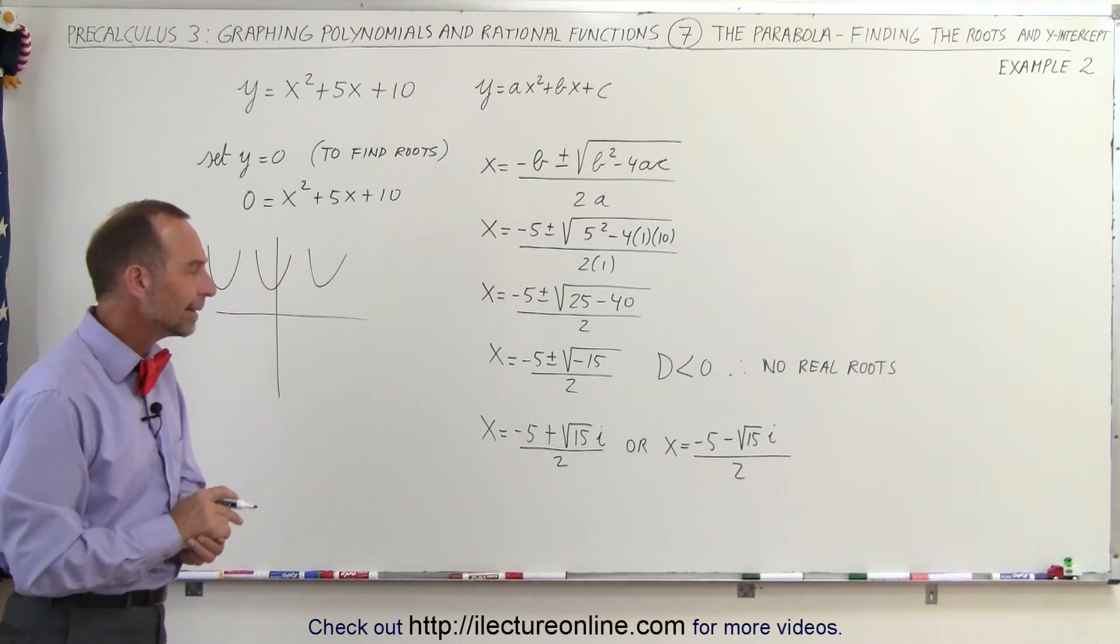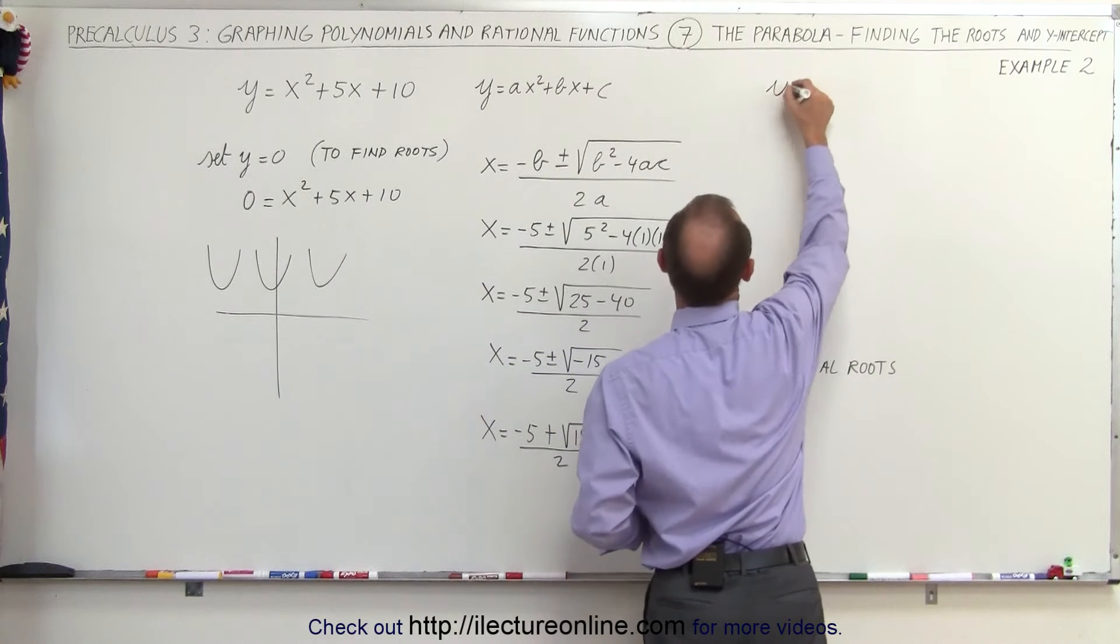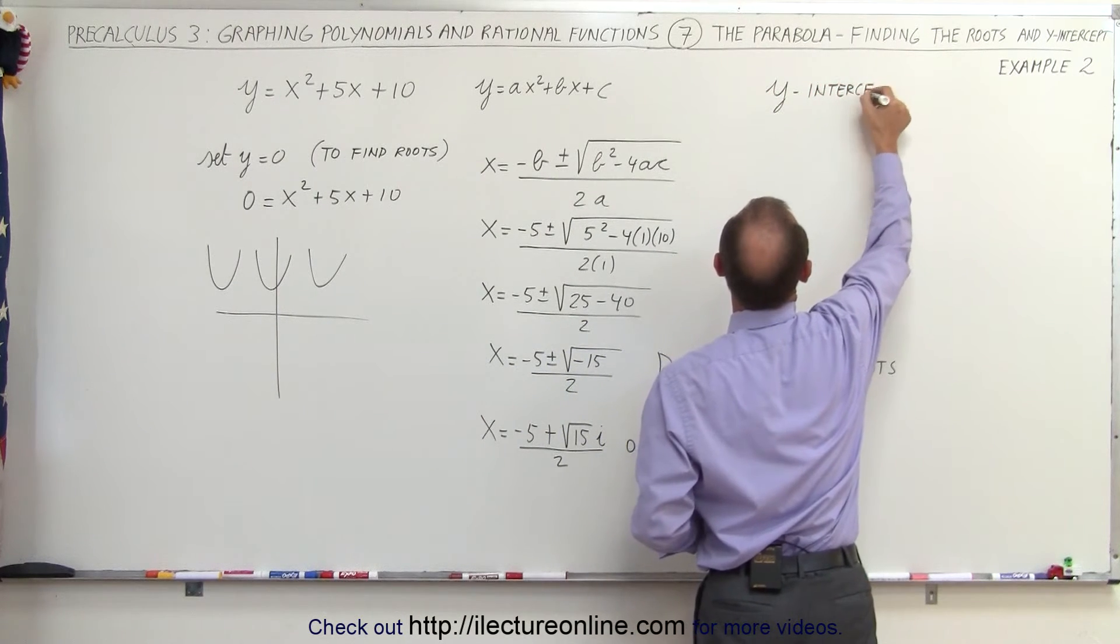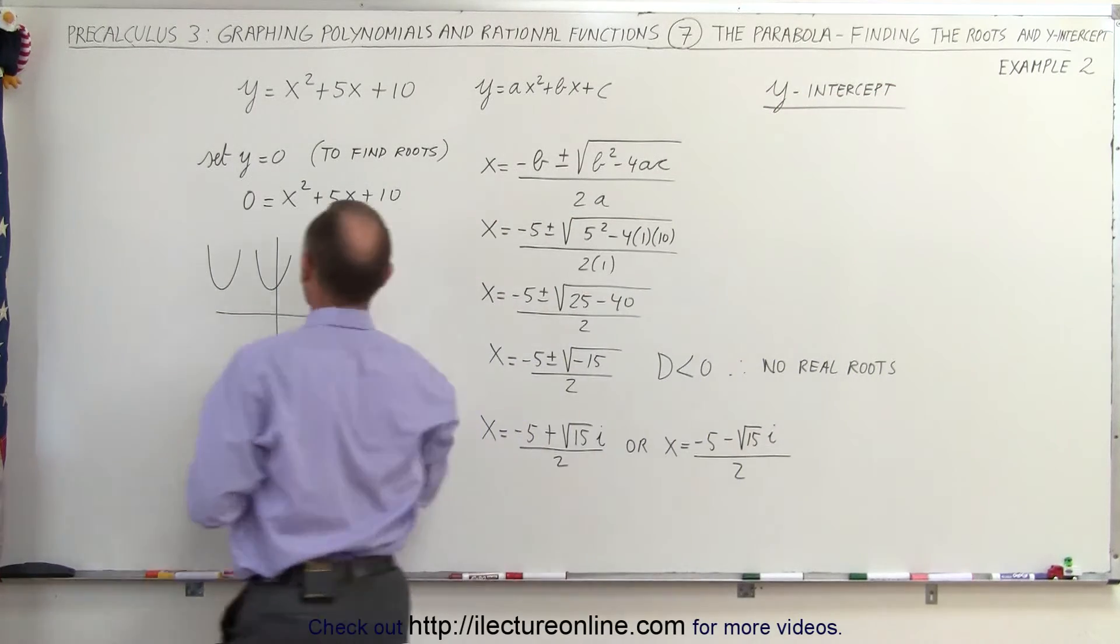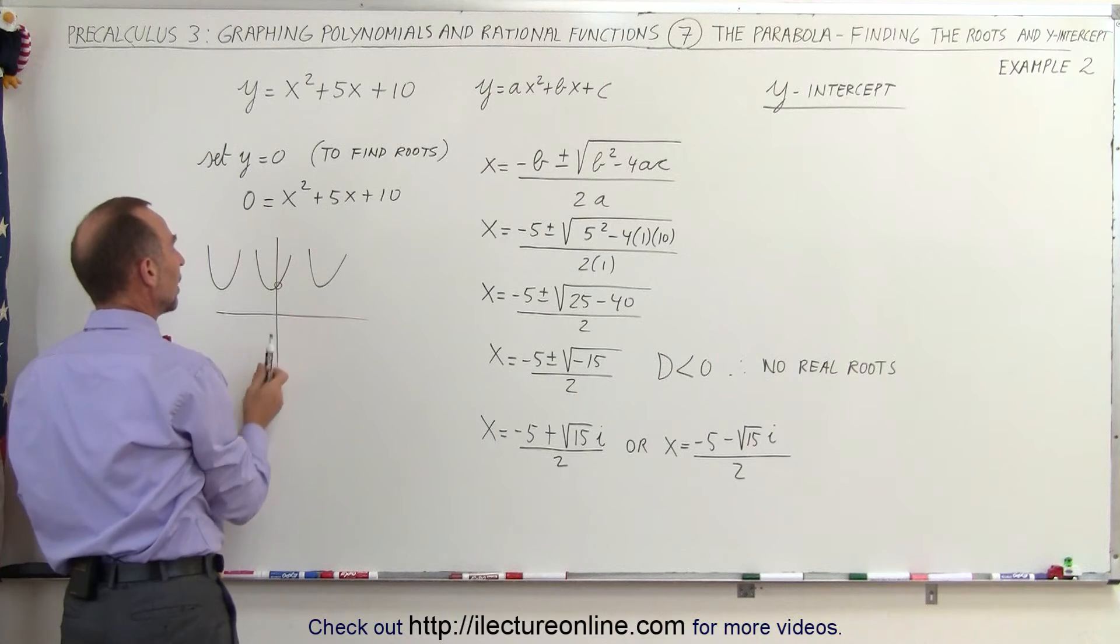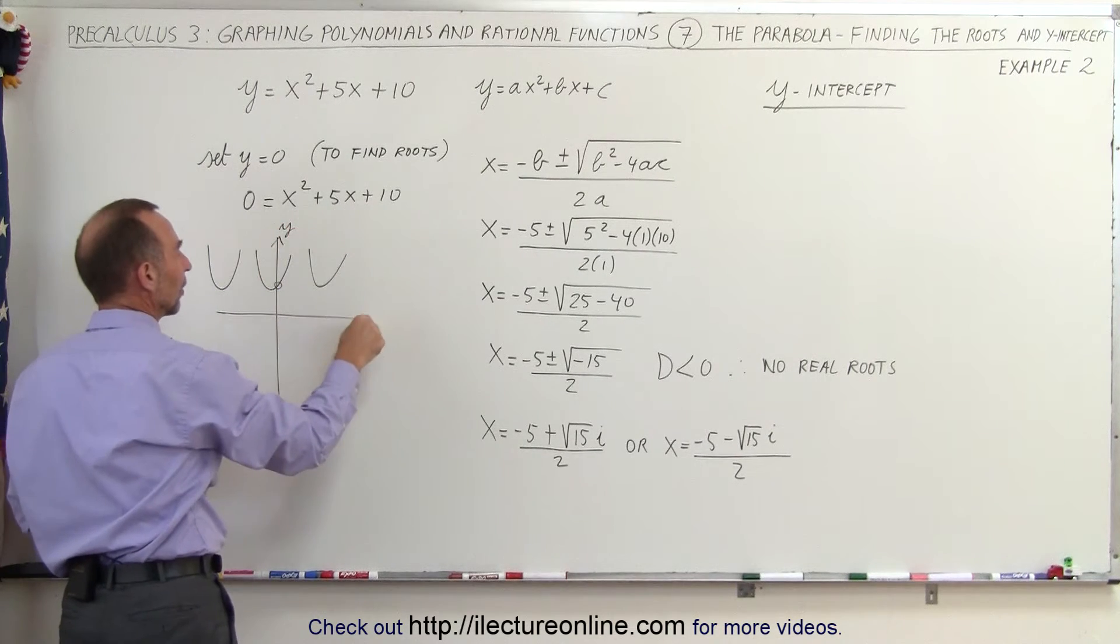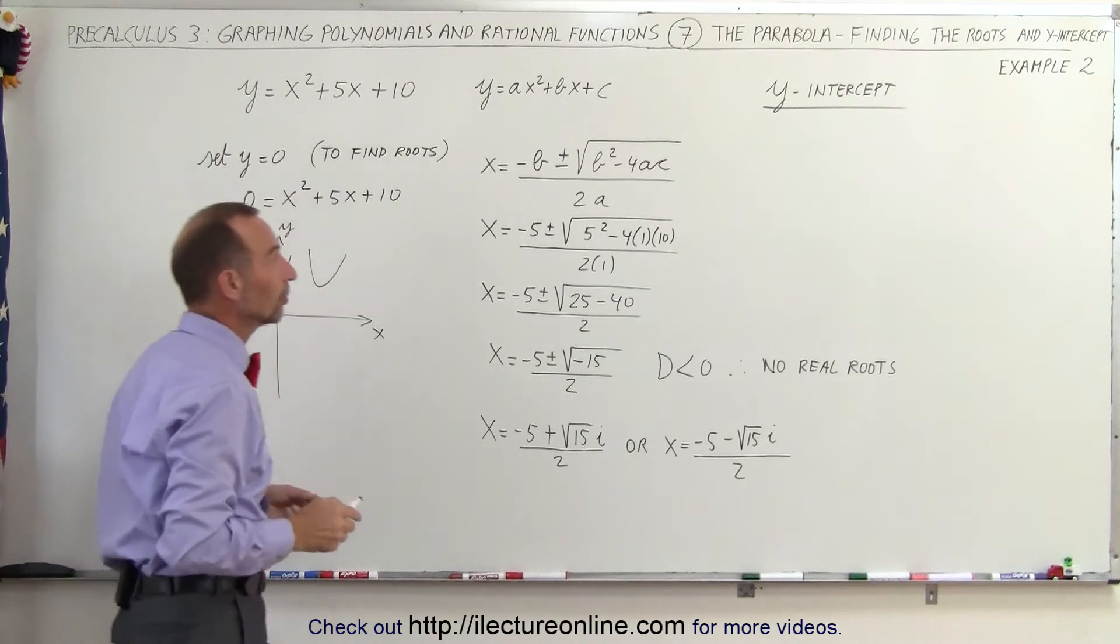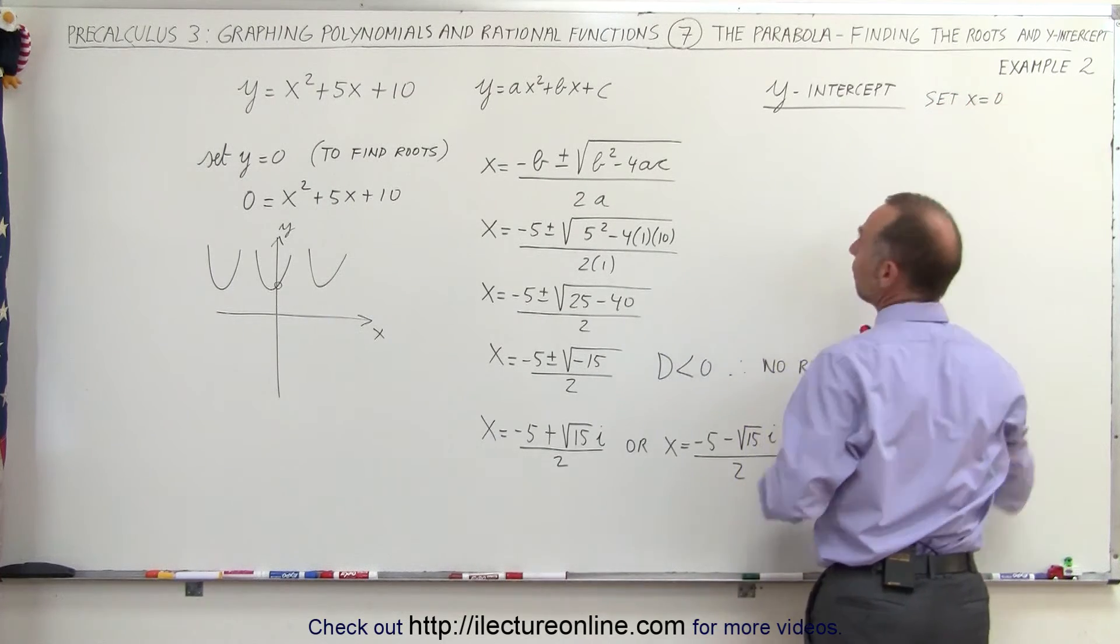Let's now also find the y-intercept. How do we find the y-intercept? To find the y-intercept, that is the place where the graph of the parabola crosses the y-axis. To do that, we need to set x equal to 0. This is our y-axis. This is our x-axis. We can see that x at that point will be equal to 0.